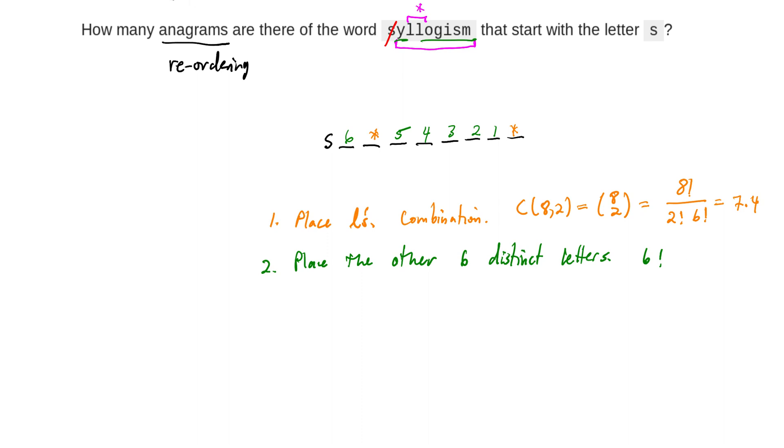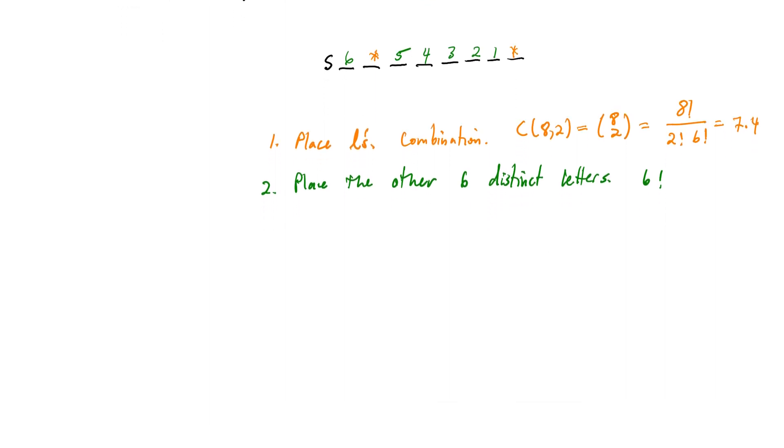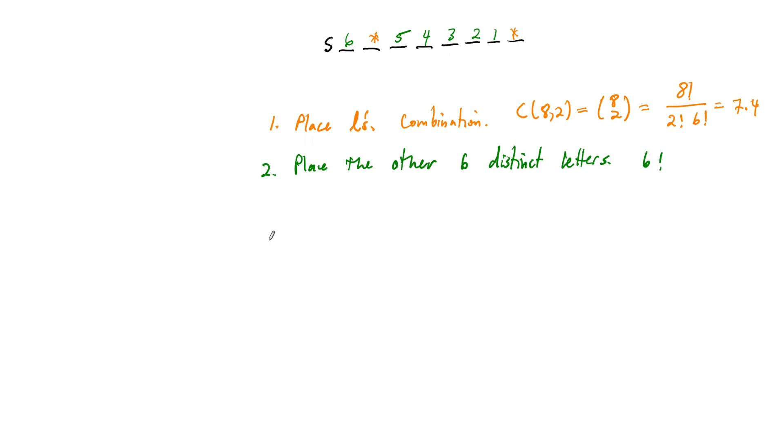And multiplying these two together, we have to multiply these together because this is an and. We place the L's and then we place the other 6 letters. So multiplying these together, we end up with, so I'm trying to think of a way to write this down. We have in this case 7 times 4 times 6 factorial choices of reorderings.